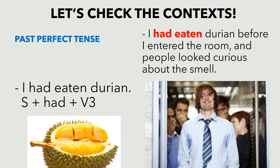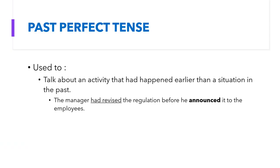The last tense is past perfect tense: 'I had eaten durian.' Context: 'I had eaten durian before I entered the room, and people looked curious about the smell.' Past perfect tense is used to talk about an activity that had happened earlier than another situation or activity in the past. For example, 'the manager had revised the regulation before he announced it to the employees.' The announcement happened in the past, but before that, another activity had happened earlier — the manager had revised the regulation. Therefore, we use: 'The manager had revised the regulation before he announced it to the employees.'